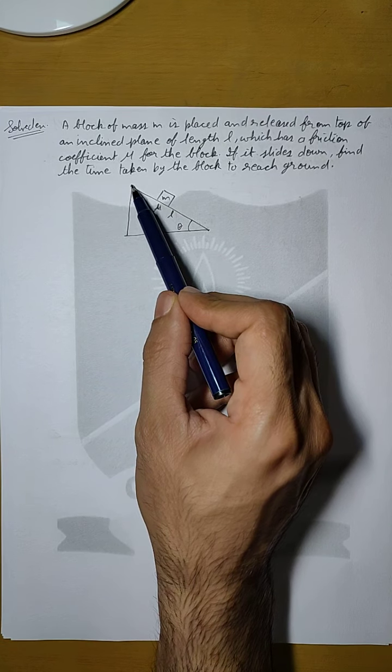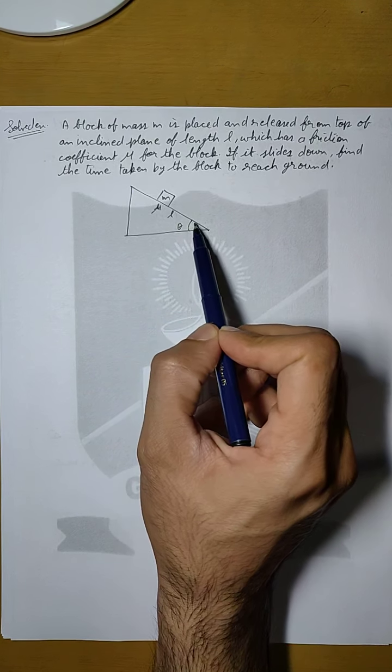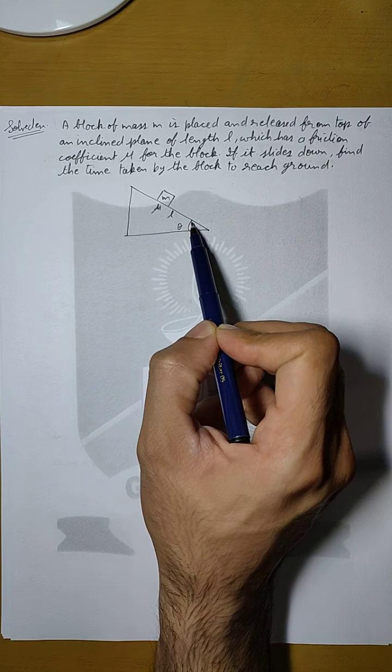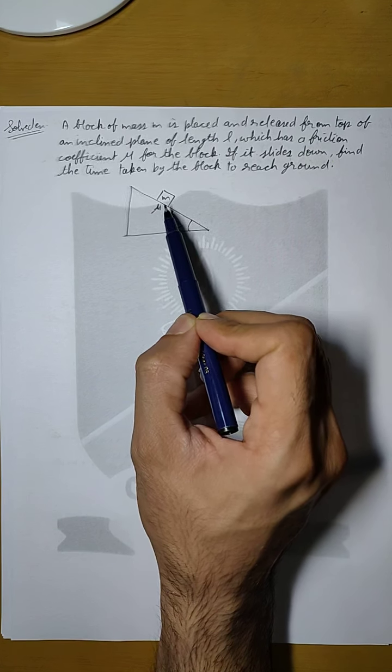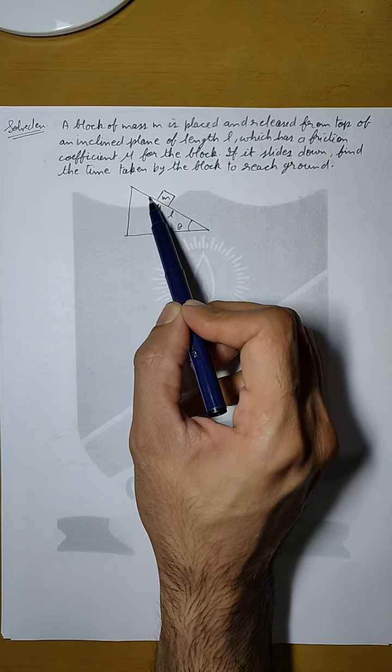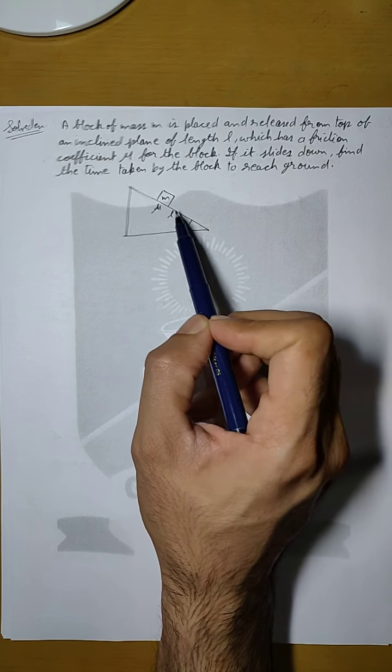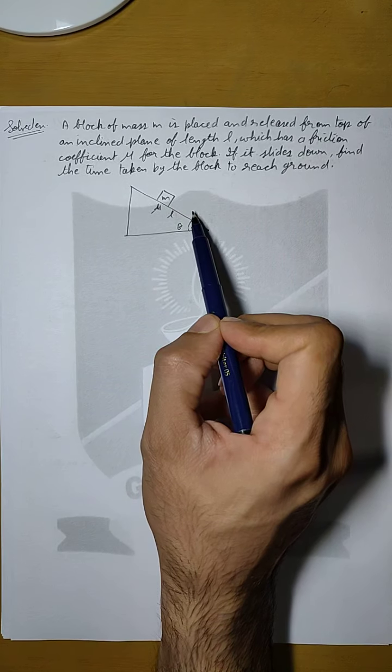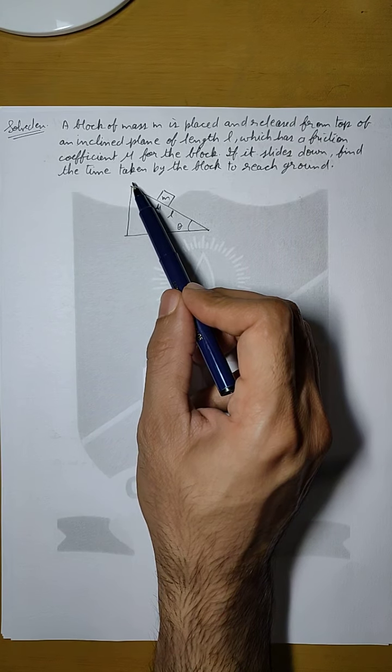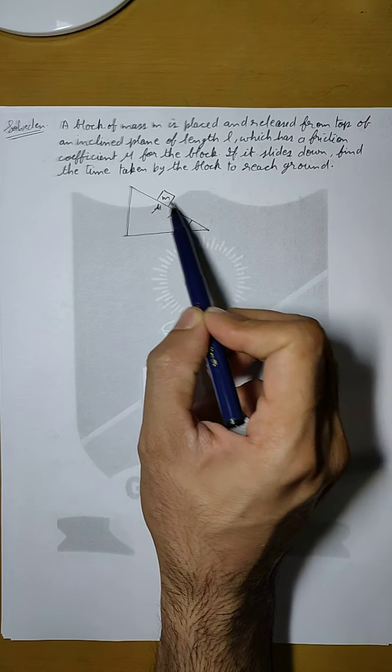So the block is covering the length of this inclined plane which is given as L. The plane is inclined at an angle theta with the horizontal and there is a coefficient of friction offered by the plane on the block which is given as mu. And we have to find the time taken by the block to cover this distance L, to reach the ground.